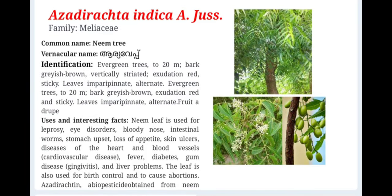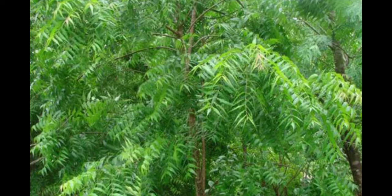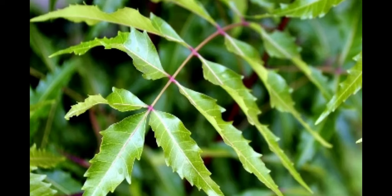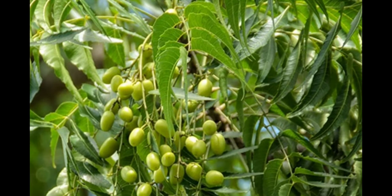Azadirachta indica, family Meliaceae. Common name is neem tree and vernacular name is Veeppu. It is an evergreen tree with grayish brown, vertically striated bark. Exudation is red and sticky. Leaves are imparipinnate and alternate. Fruit is a drupe. Neem leaf is used for diseases of the heart and blood vessels, fever, diabetes, gum disease and liver problems. The leaf is also used for birth control. Azadirachtin is a biopesticide obtained from neem.